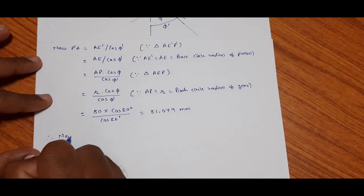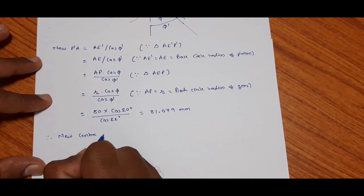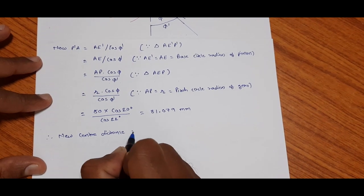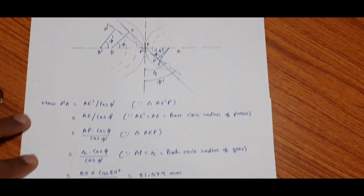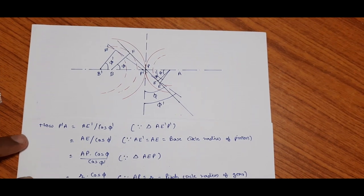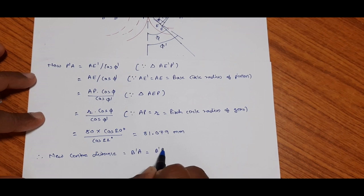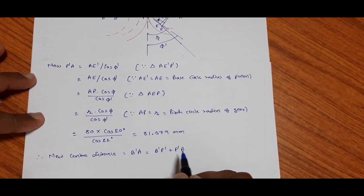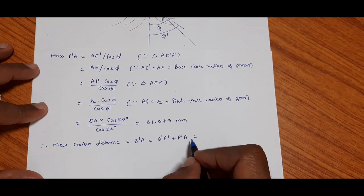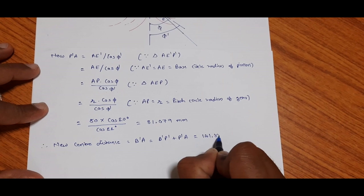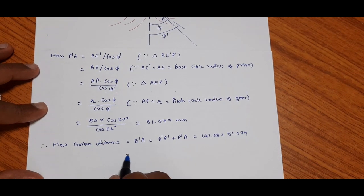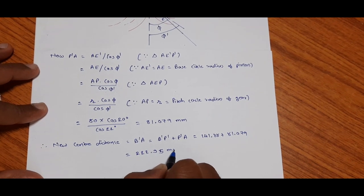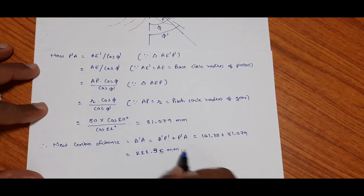So the new center distance equals B'A = B'P' + P'A = 141.88 + 81.079 = 222.95 mm. Thank you.